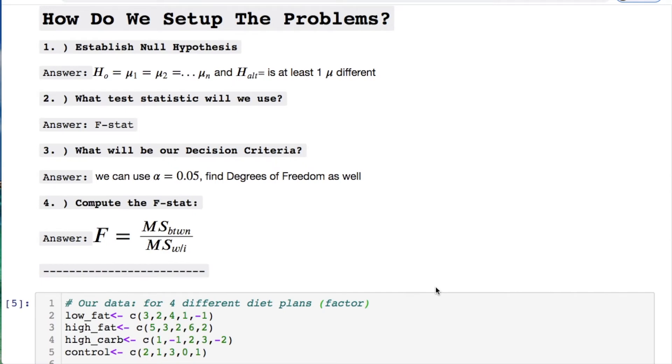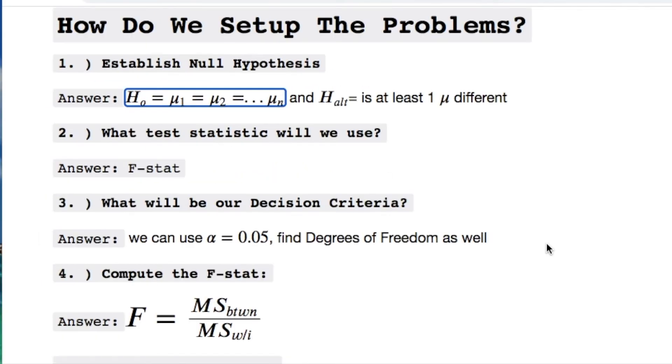The first thing you want to do is establish your null hypothesis. So that's what we're doing here. We're saying that the means are equal to each other. The alternate, at least one mean is different. What statistic will we use? The f statistic. What is our decision criteria? I decided 0.05, you could do 0.01 whatever you want. And then you have to find your degrees of freedom. For us we're going to have two degrees of freedom in this test as you're going to see. And then we need to compute the f statistic.